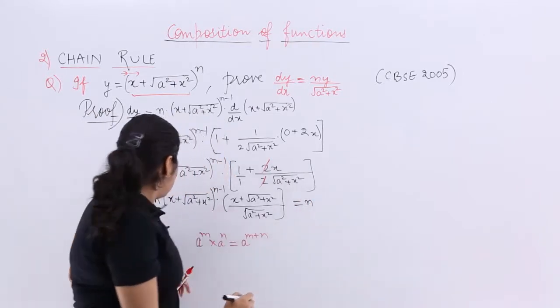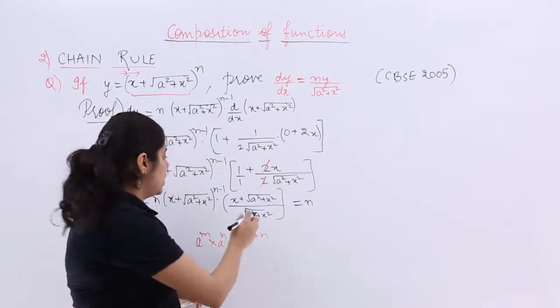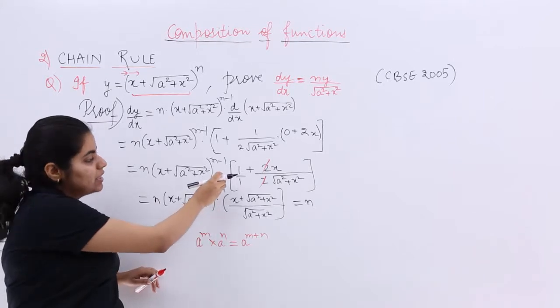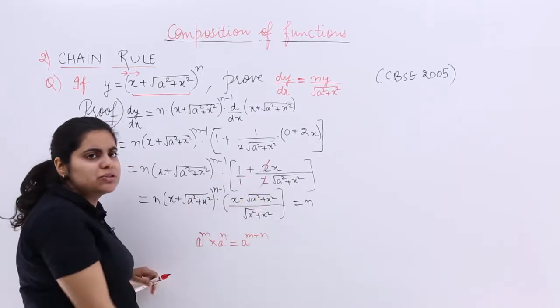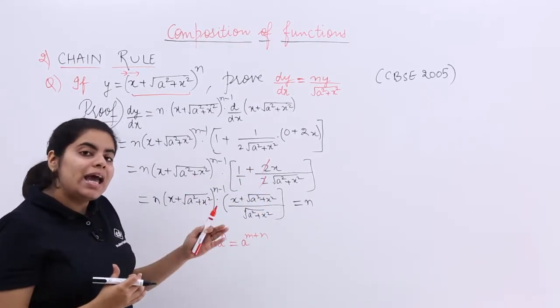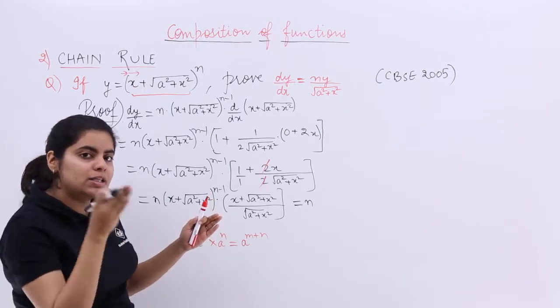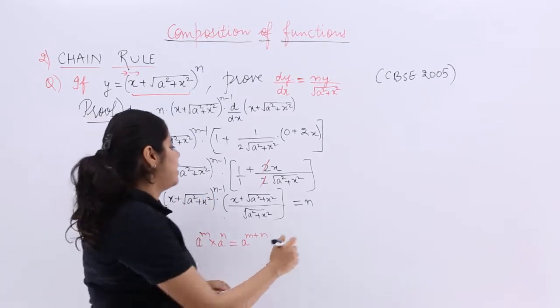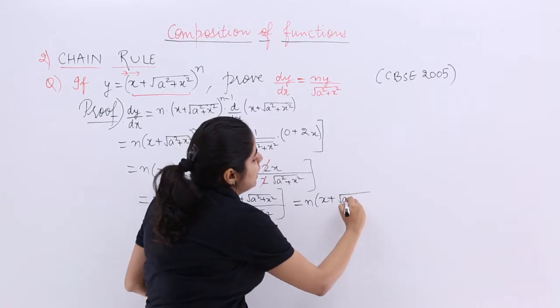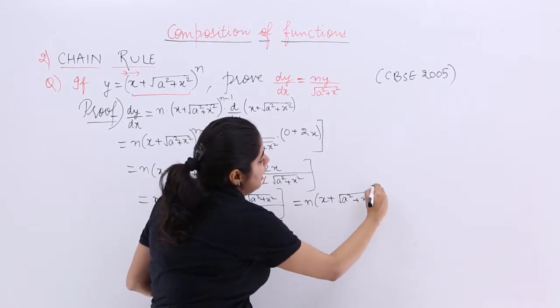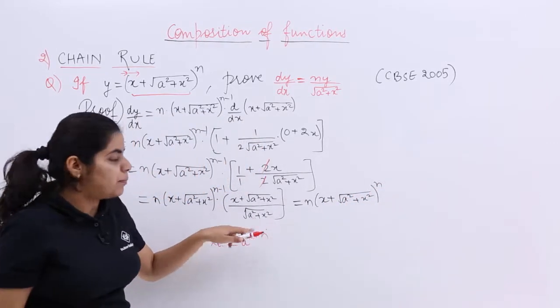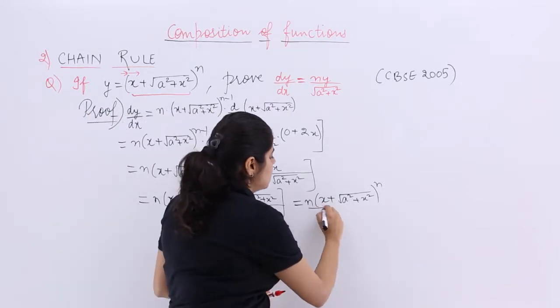N outside. Then you have this as n-1 power. You have this as 1 power. So they add n-1 plus 1, minus 1 plus 1 gets cancelled. Only power is n. So x plus under root a square plus x square power is n. Then upon under root a square plus x square.